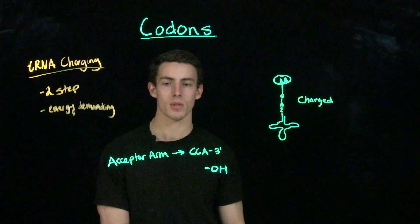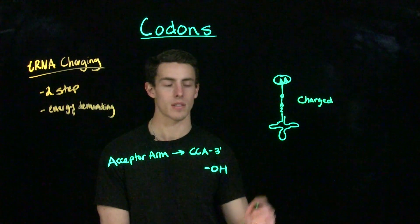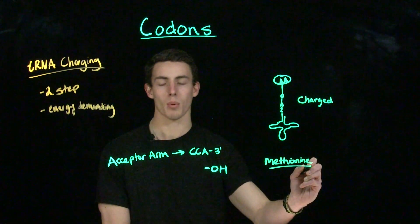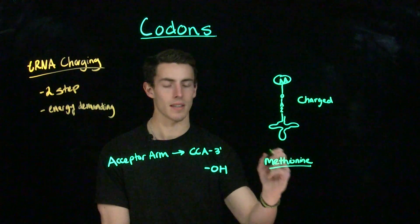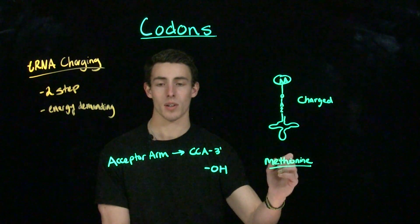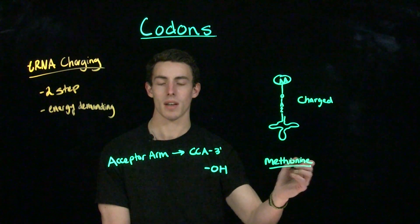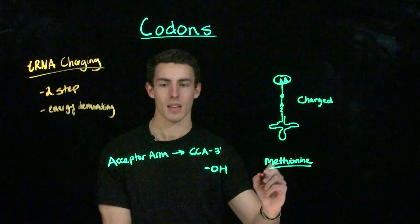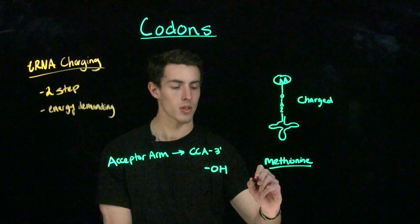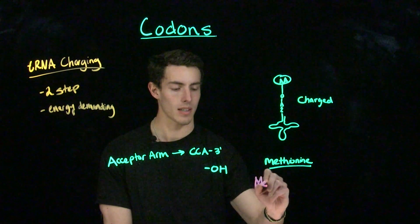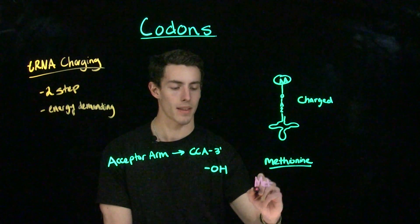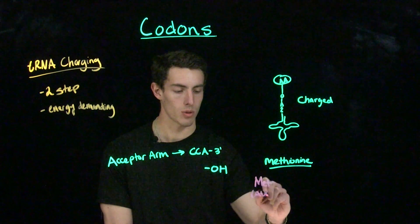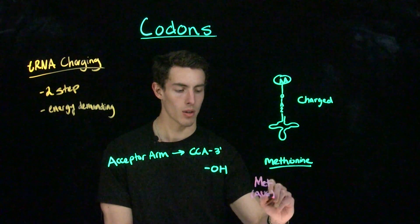Probably the most important charged tRNA to know is methionine. Methionine is important because it's the initiator amino acid of every polypeptide. In eukaryotes, we write it as MET, corresponding to the AUG codon.